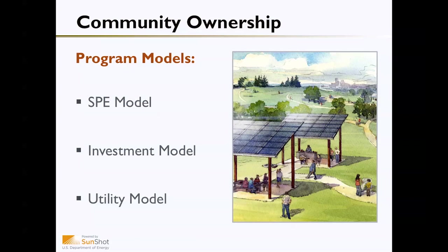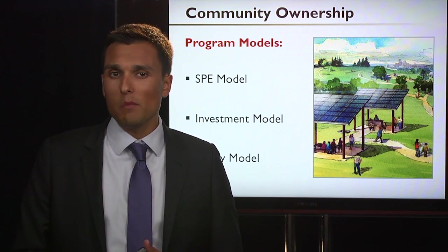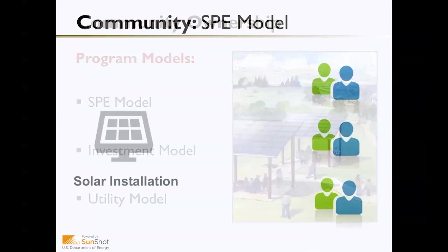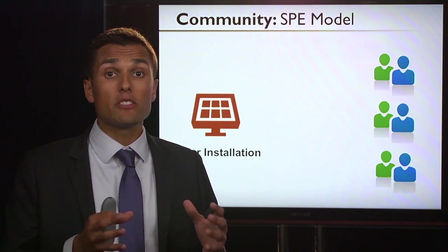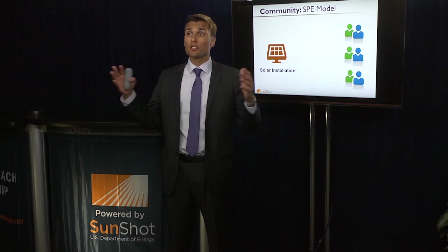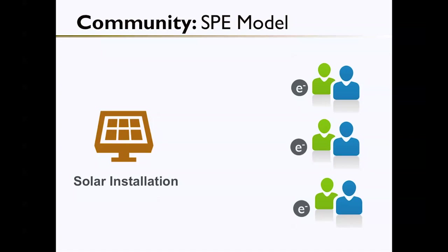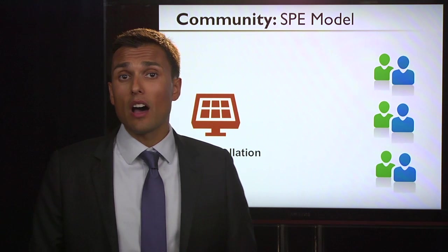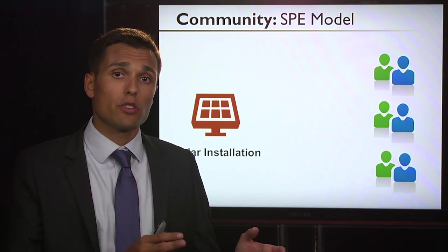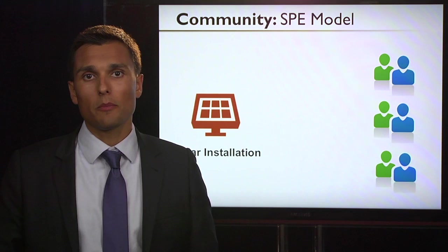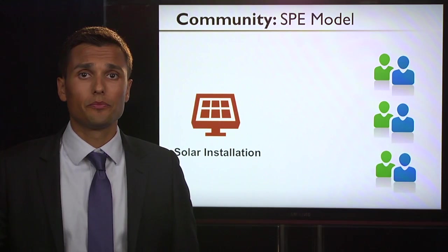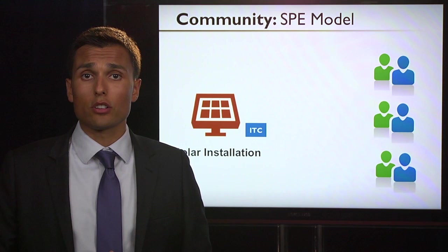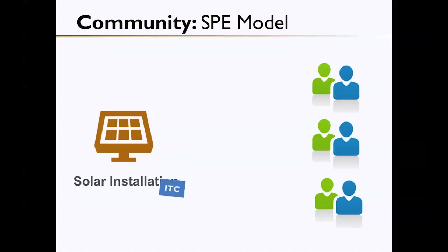There are three different community ownership program models: the Special Purpose Entity (SPE) Model, the Investment Model, and the Utility Model. Under the Special Purpose Entity Structure, a group of investors gets together and collectively purchases a solar installation. The installation may be centrally located while investors are dispersed throughout the community. Depending on the number of shares they own, they can receive electricity over the life of the system. However, this type of structure is not available everywhere, as it requires policies such as virtual net metering. Another big barrier is that the investment tax credit can't be taken by those individual homeowners.